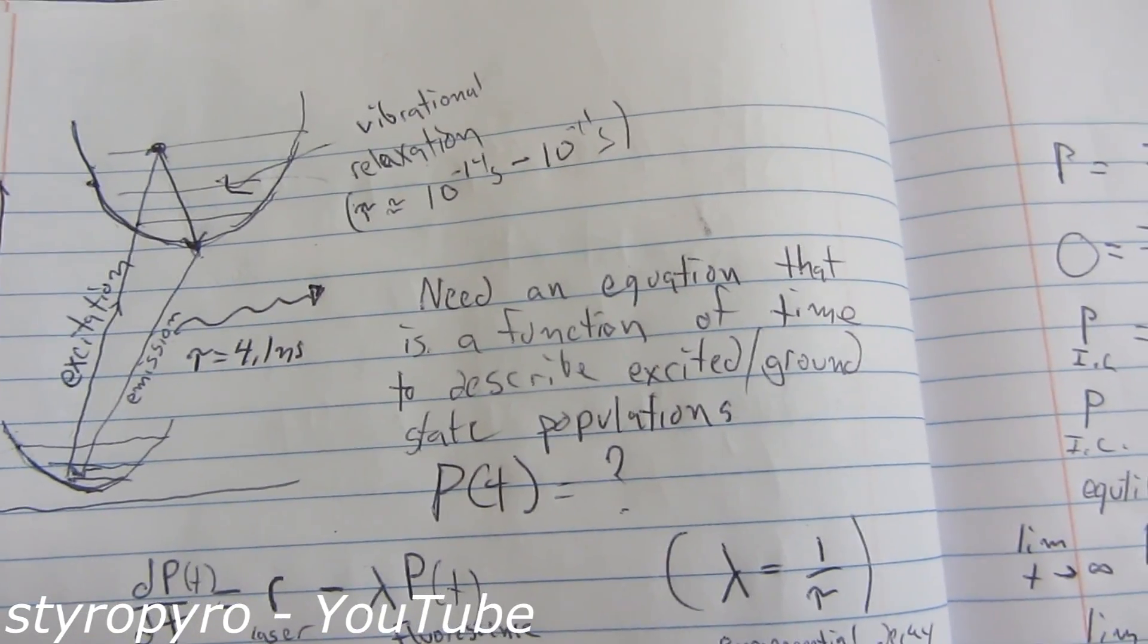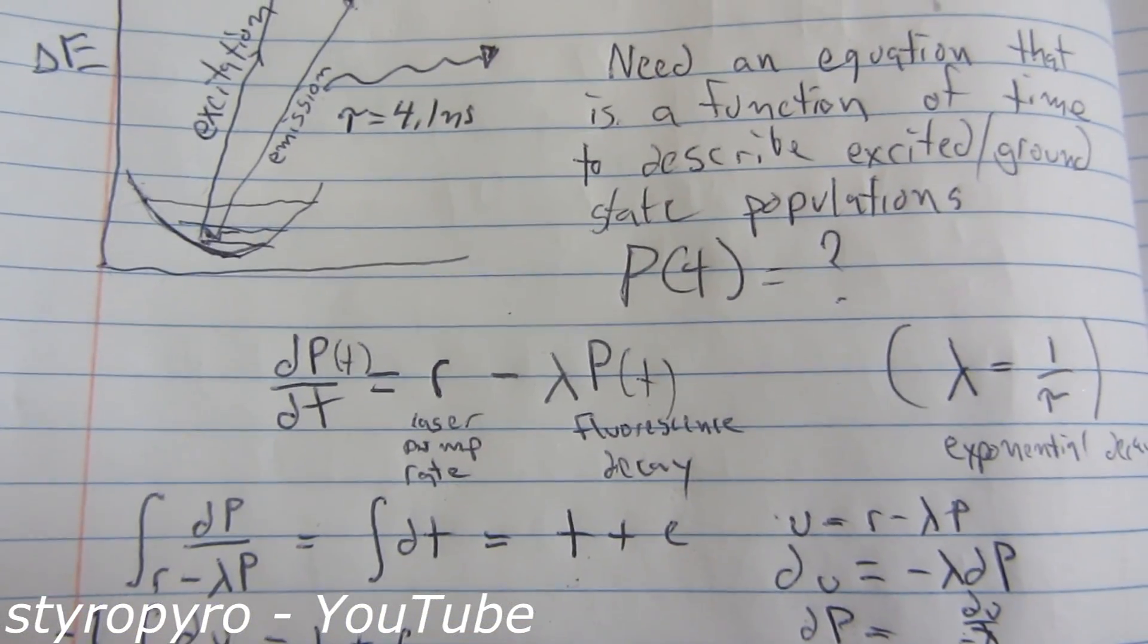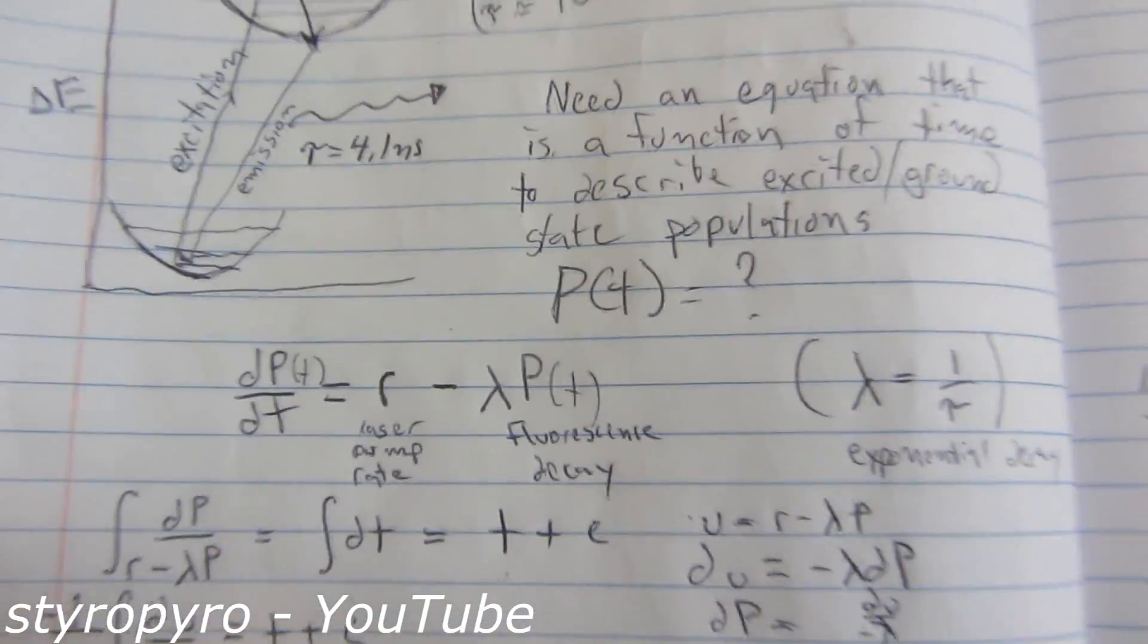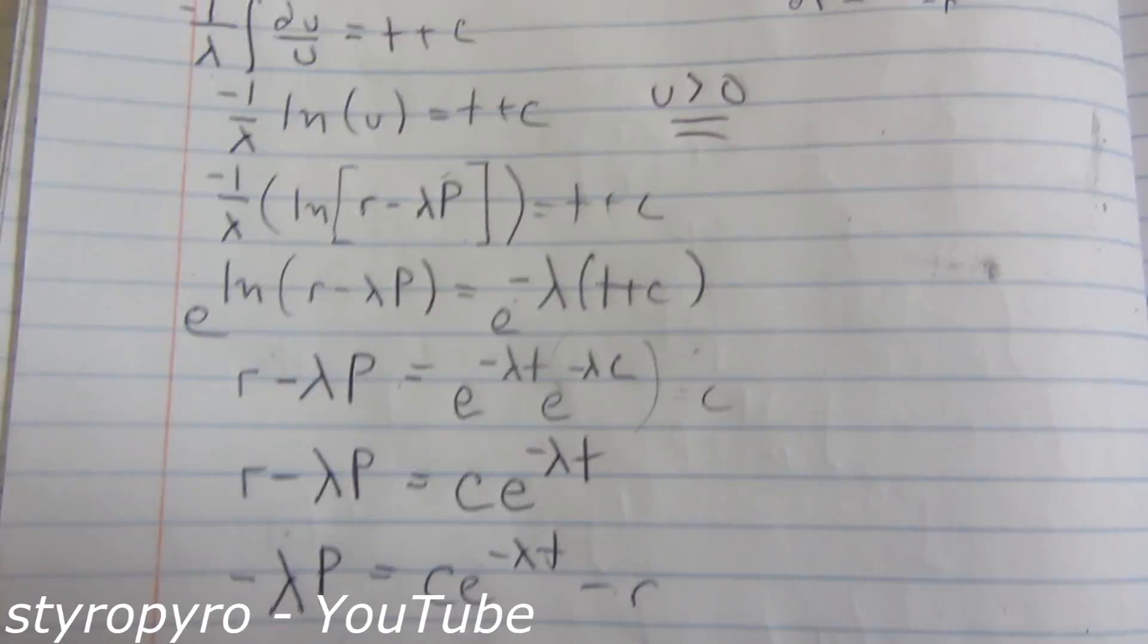Now it's hard to just write this function from scratch. So I had to construct a differential equation that takes into account the laser pumping rates, as well as the fluorescence decay rate. So once I came up with that equation, I simply hit it with the methods of solving differential equations. And this one is a separable equation, so it's not super hard to solve.